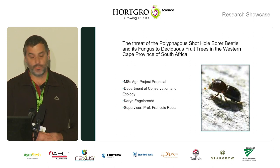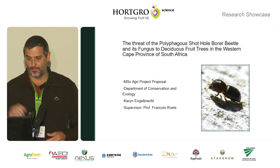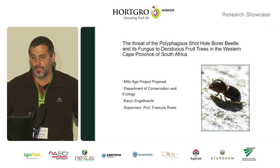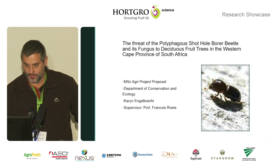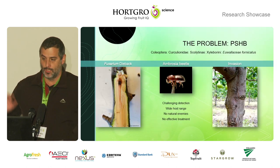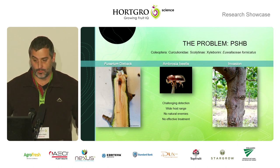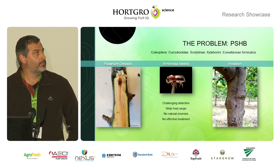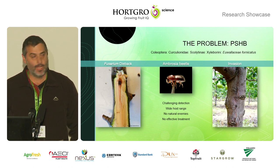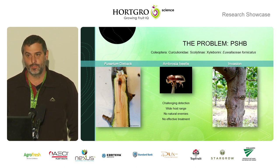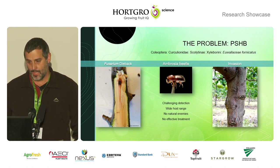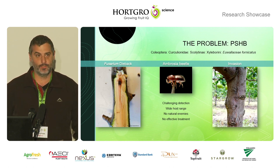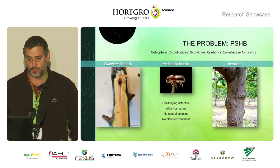This particular study is on the threat of the polyphagous shot hole borer to deciduous fruit trees, and particularly what we're seeing in the southwestern Cape at the moment. The beetle is a small invasive beetle, all the way from southeast Asia, and has invaded many countries, including South Africa in 2017. The beetle and its fungus together have managed to infest and kill quite a large number of host tree species.